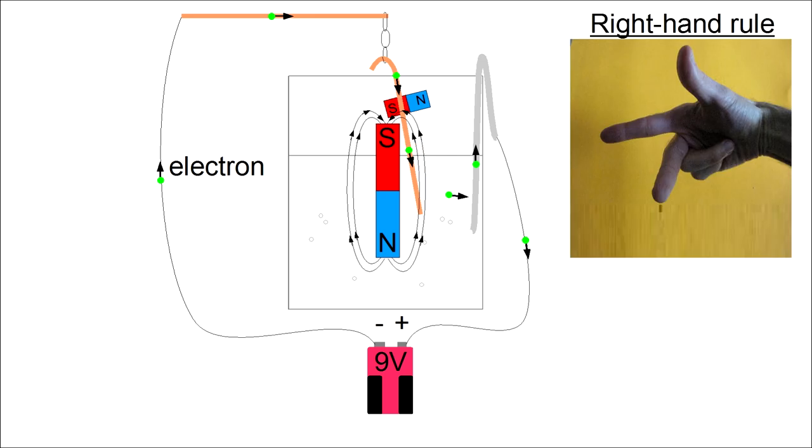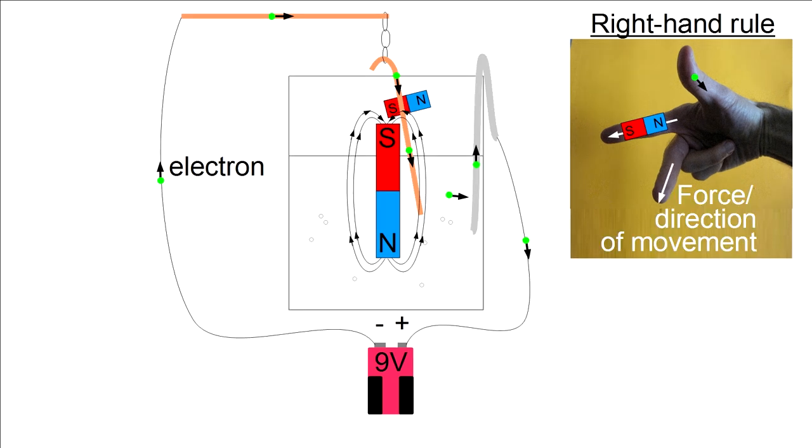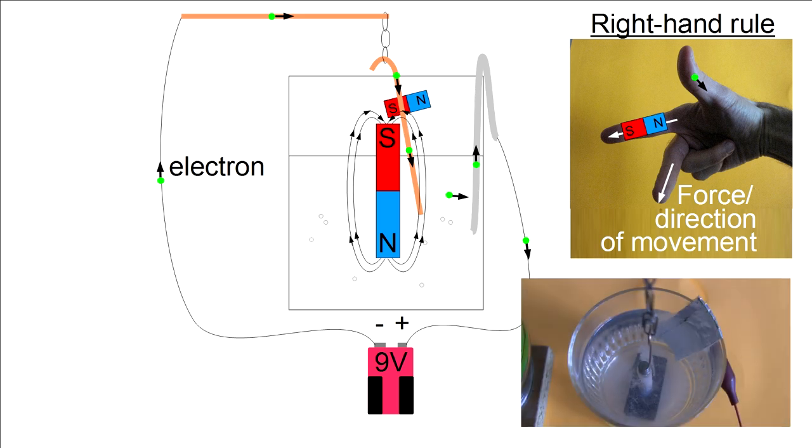You can use a right-hand rule to figure out what happens next. Point your thumb in the opposite direction that the electrons are moving, downward in this case. Point your index finger, also called your pointing finger, in the direction of the magnetic field as shown. And make your middle finger stick out at right angles to both of those. The middle finger indicates the direction of the force that the wire will experience. As you see this is just the direction the wire is moving when on the right, as shown in the diagram. It moves outward from the diagram towards you.